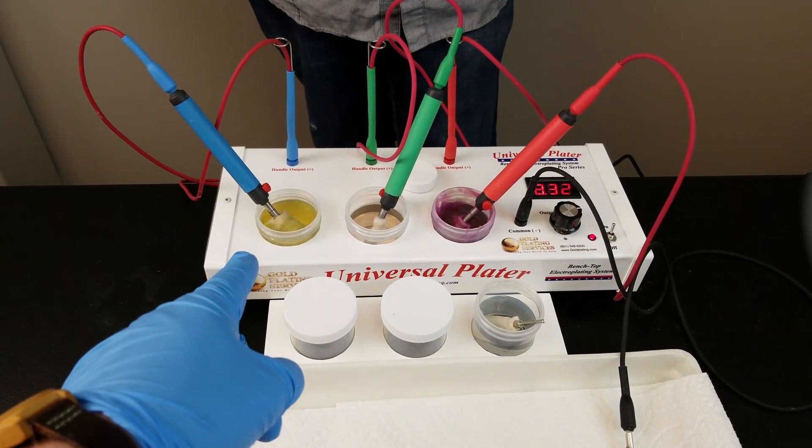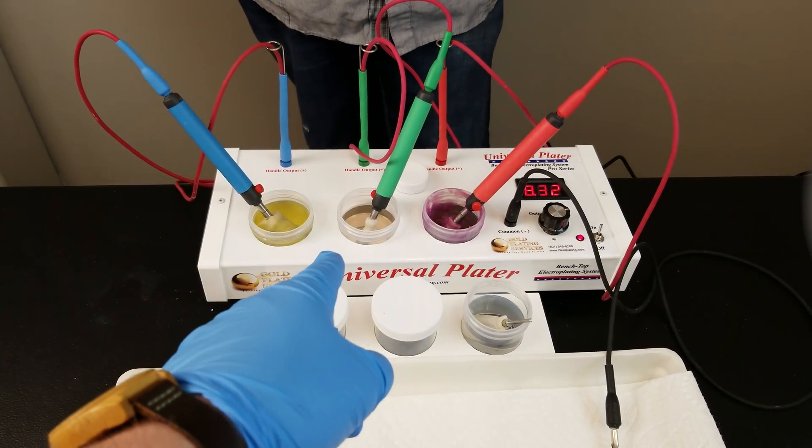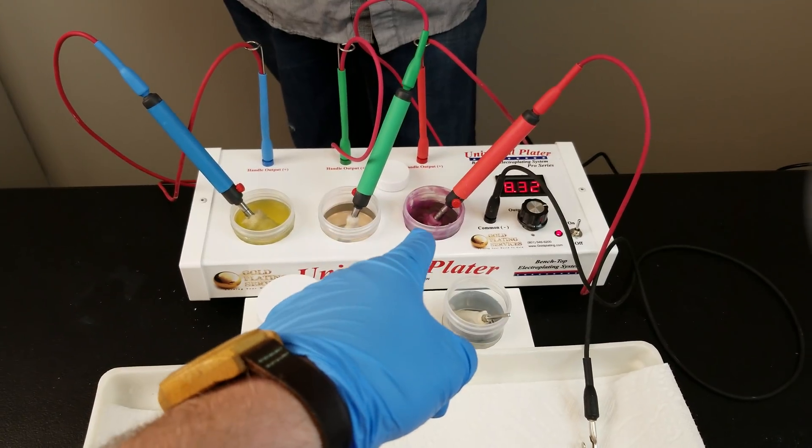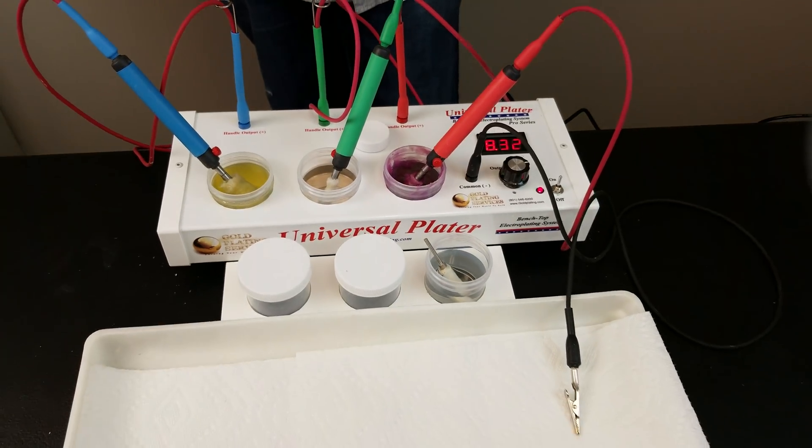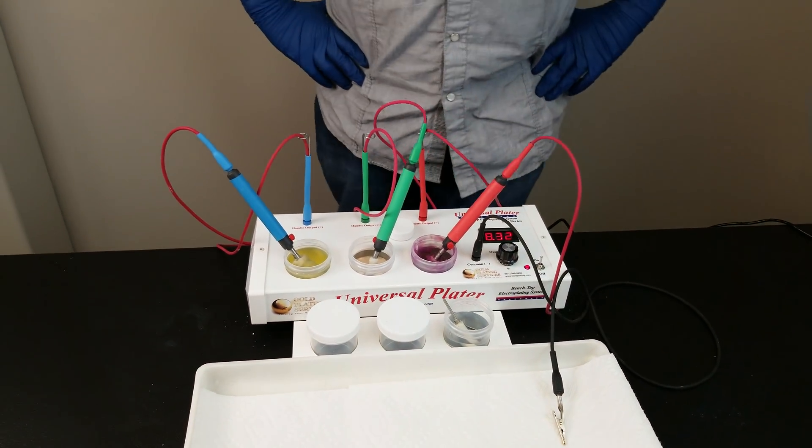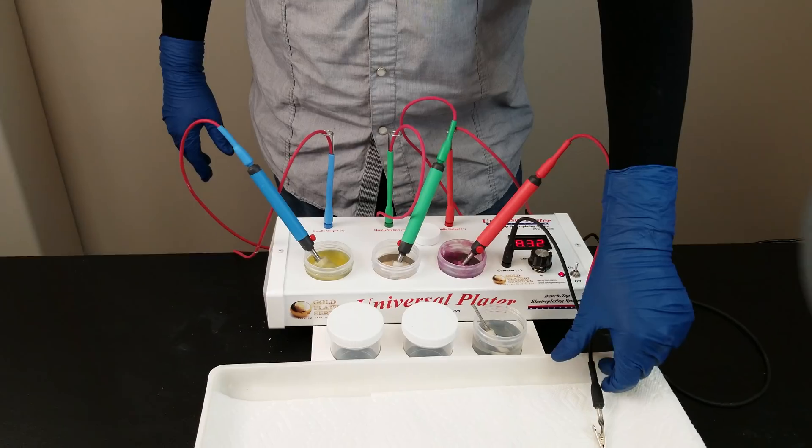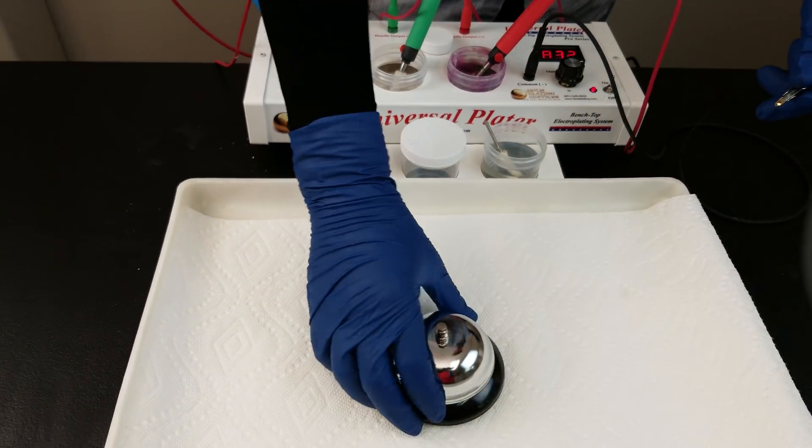To do that, we're using four different solutions today. We have our Electro Cleaner, TriVal, our Gel Brush Gold, and a Brush Rose Gold. We've got Rob over here who's going to be doing the plating for us and he'll tell you a little bit more about it as he goes.